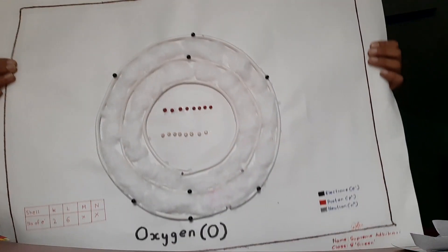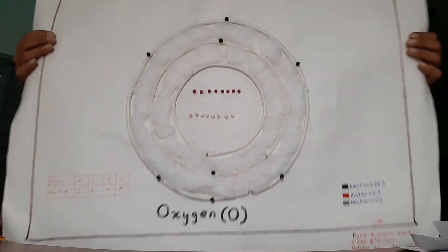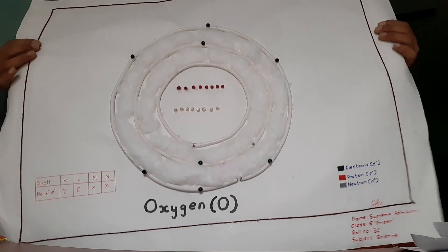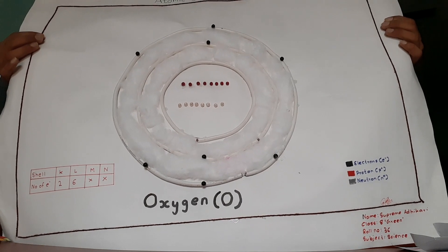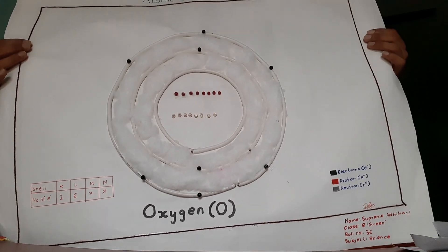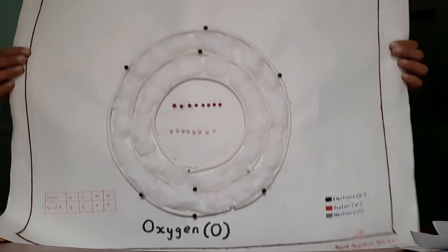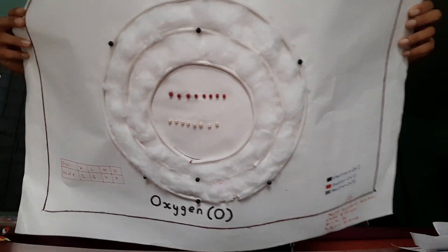Next project work is made by Supreme Naudikarin. Let's check out how creatively he has completed his project. He has used cotton, wire, and pieces of mala to make the atomic model of oxygen. This is so beautiful and creative.